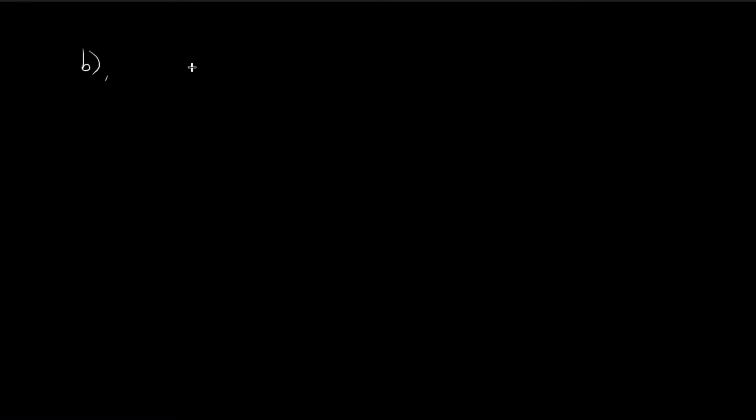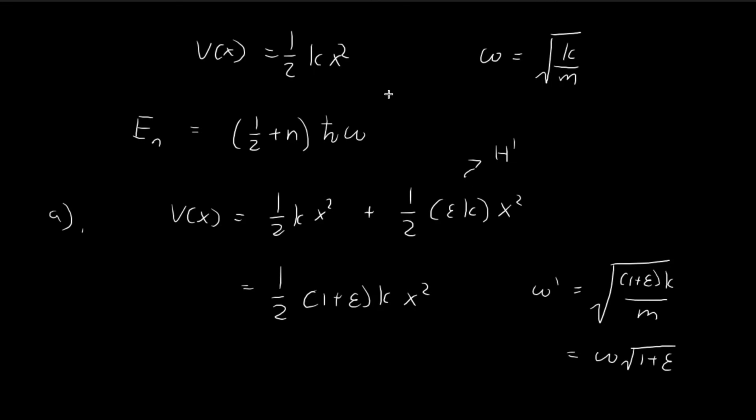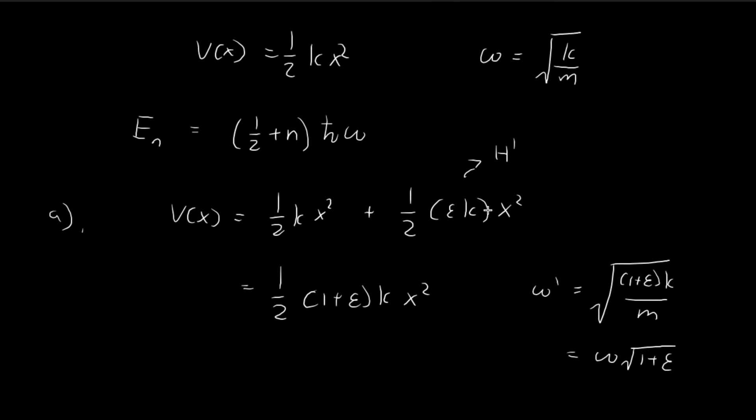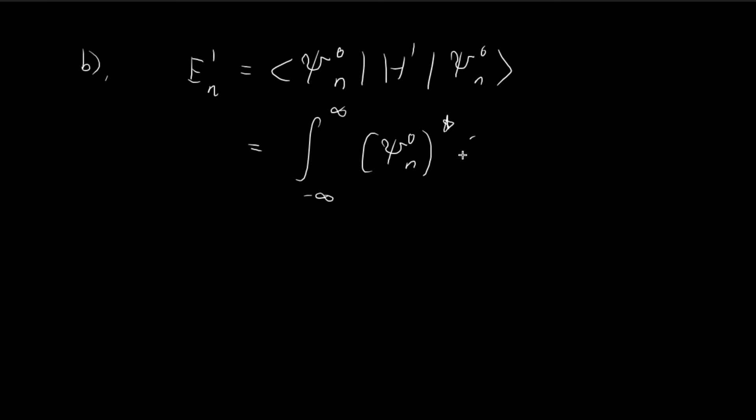Now moving on to part B, we would like to obtain the first order corrections to the allowed energy levels for this perturbation term. In order to do that, we just apply this formula for the n-stationary state. So all we have to do is evaluate this expression. We have an integral from negative to positive infinity. And then we have the conjugate of the n-stationary state, and then we substitute in the perturbation term, which is just one-half epsilon kx squared, and then multiplied by the n-stationary state, dx.